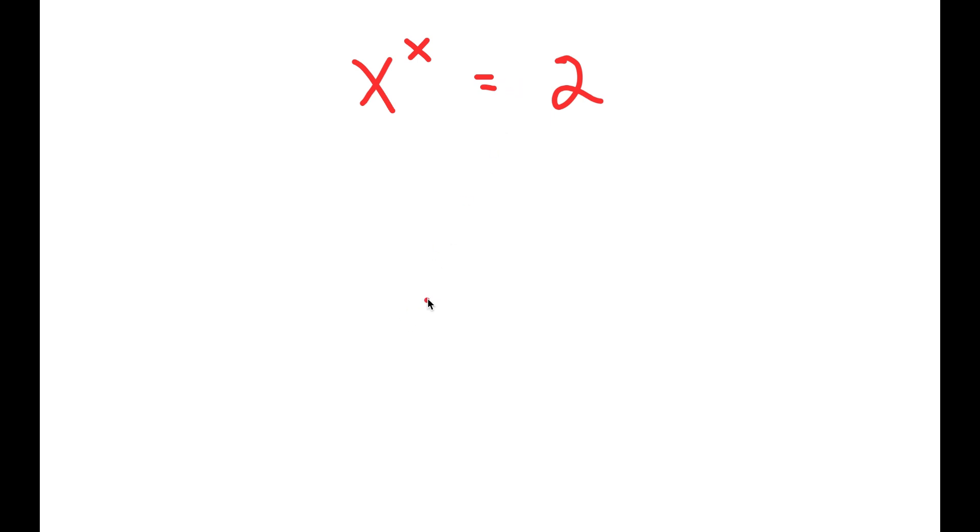So to solve this, I'm going to use logarithms and the properties that come with logarithms. I'm going to first start by taking the natural log on both sides, so I get ln x to the power of x is equal to ln 2.